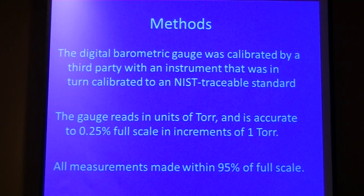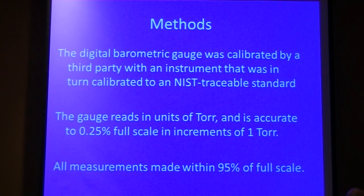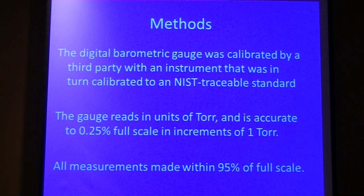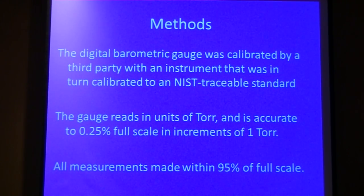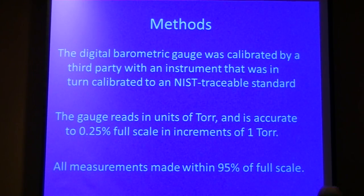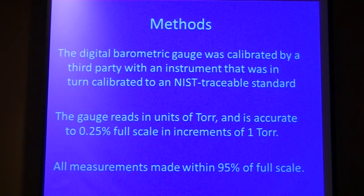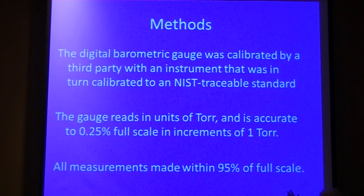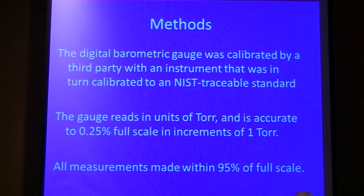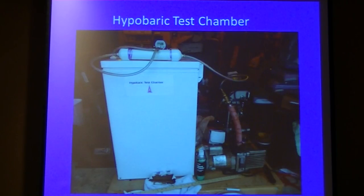A digital barometric gauge was calibrated by a third party with an instrument that was in turn calibrated to a NIST-traceable standard. The gauge reads in units of torr, accurate to 0.25% full scale in units of one torr. All measurements were made within 95% of the full scale, which translates to about plus or minus two torr at worst.